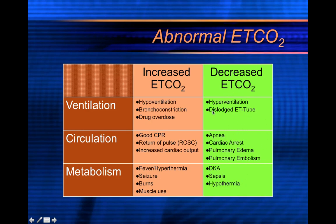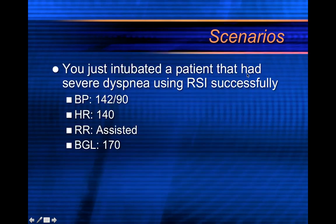The decreased end-tidal CO2 — things that cause a decrease: ventilatory causes include hyperventilation, a dislodged ET tube; circulatory causes include apnea, cardiac arrest, pulmonary edema, and pulmonary embolism. Metabolic causes include DKA, sepsis, and hypothermia. It's important to know what causes an increase versus a decrease in end-tidal CO2.